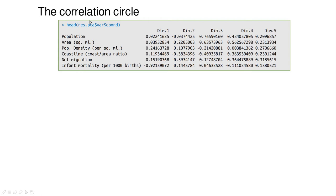The next thing we can do is plot a correlation circle. We use the variable called var — which stands for variables, i.e., the columns of our dataset — and plot the coordinates, which are the loadings. By loading I mean the proportion of each original variable in each principal component. For instance, population has a small weight in the first dimension but is strong in the third, while infant mortality per thousand births is strong in the first dimension but weak in the third.